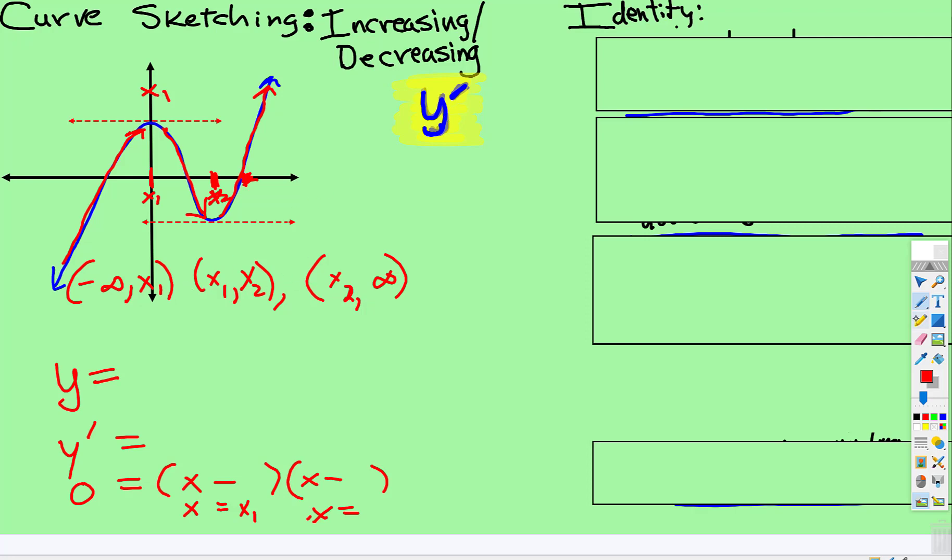we now have these two critical points. That's what they're called. When the behavior changes from increasing to decreasing, or from decreasing to increasing, this point right there is called a critical point,